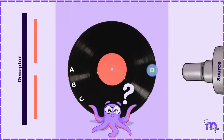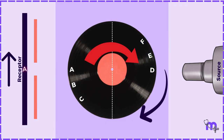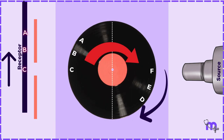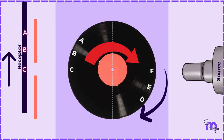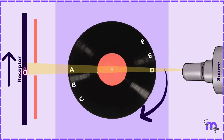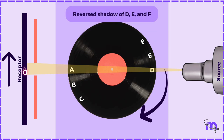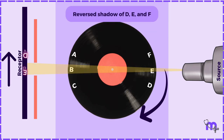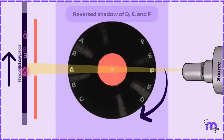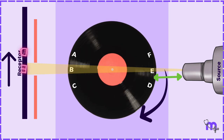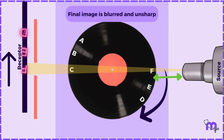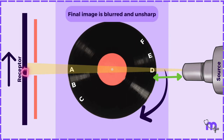What about objects D, E, and F? Upon careful observation, you will notice these objects move in the opposite direction of the image receptor and are on the opposite side of the disc. As a result, a reversed shadow of D, E, and F appears on the radiograph. Due to their proximity to the X-ray source, these structures become significantly magnified, leading to blurring and marked unsharpness, making them obscure on the final image.